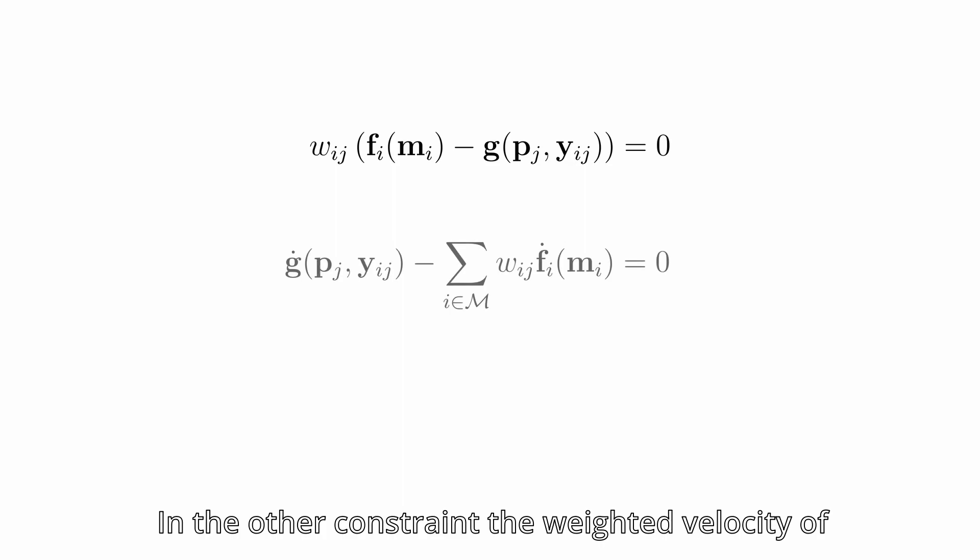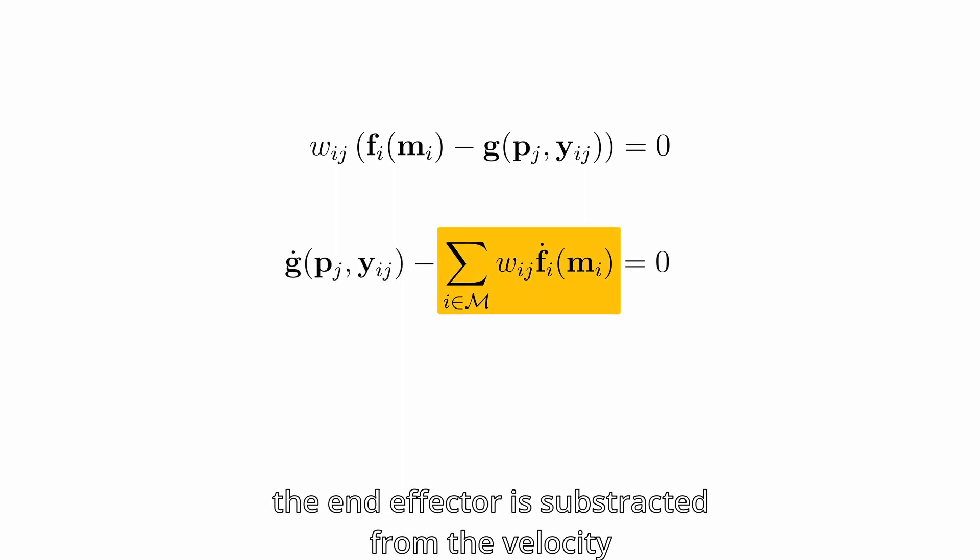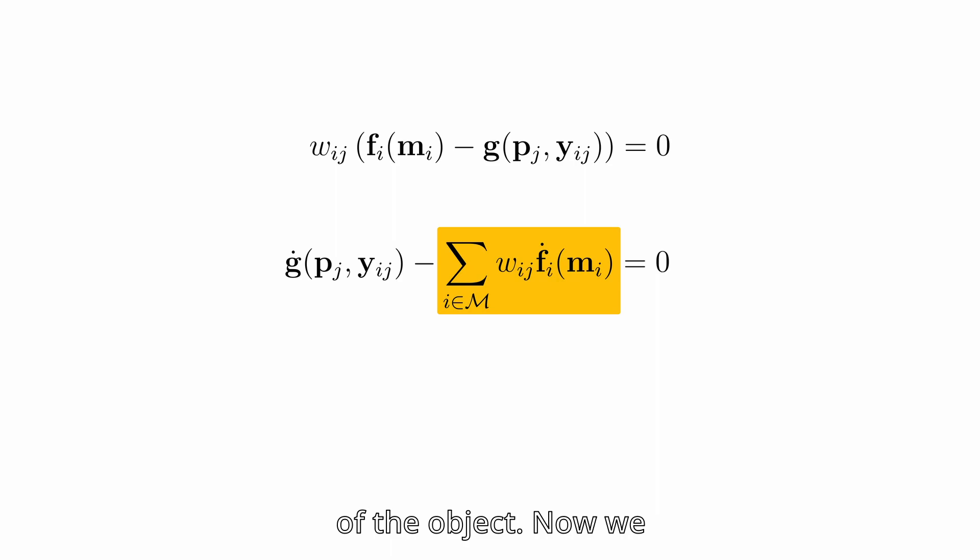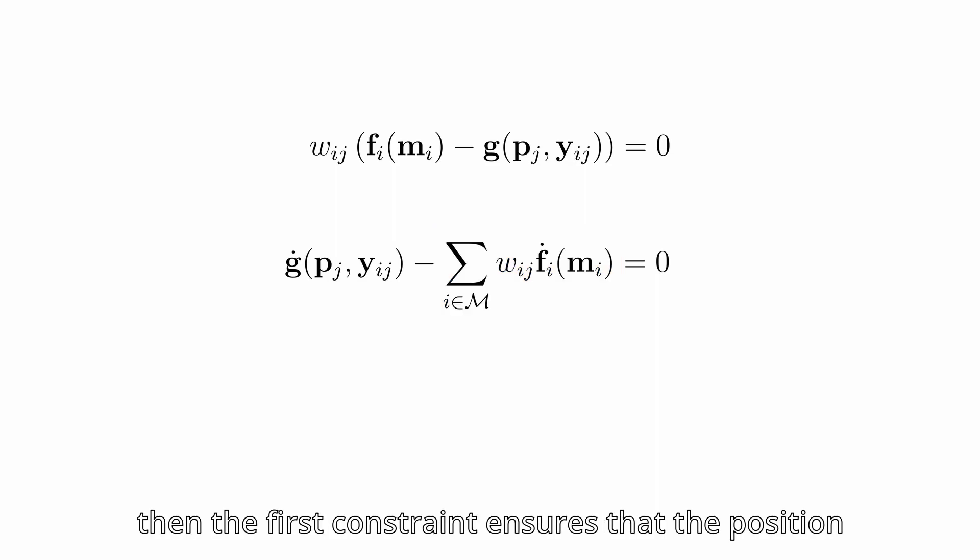In the other constraint, the weighted velocity of the end effector is subtracted from the velocity of the object. Now we see that if the value of the weight is non-zero for some duration, then the first constraint ensures that the position of the end effector and the object are the same.